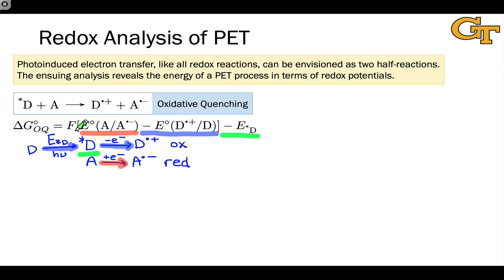These potentials are multiplied by Faraday's constant F, which serves as a conversion factor from electrical potential in volts to an energy value in electron volts, kilocalories per mole, or kilojoules per mole. Very commonly, excitation energies are expressed directly in kilojoules or kilocalories per mole.